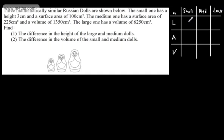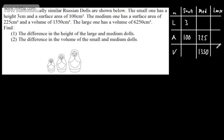Now let's fill out this information. The small one has a height of 3 and a surface area of 100. The medium one has a surface area of 225 and a volume of 1,350. The only information we have about the large one is that it has a volume of 6,250.